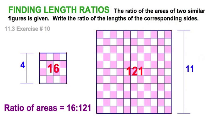you would recall that 16 is 4 squared, 121 is 11 squared. In other words, we'll take the positive or principal roots of those two numbers and, therefore, the ratio of the corresponding sides, 4 to 11.